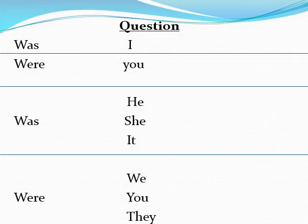The next one is question. Question means a sual. Just put 'was' or 'were' at the beginning of the question, before the pronoun. For example: was I, were you, was he, were they.